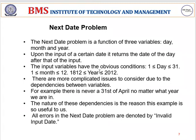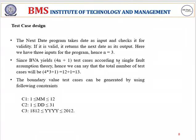The next date problem should give the next date of a particular input date. The number of test cases produced by boundary value analysis depends on the number of inputs. The common formula is 4n+1, where n represents the number of inputs. In this next date problem we have three inputs — month, date, and year — so 4×3+1 gives us 13 test cases.